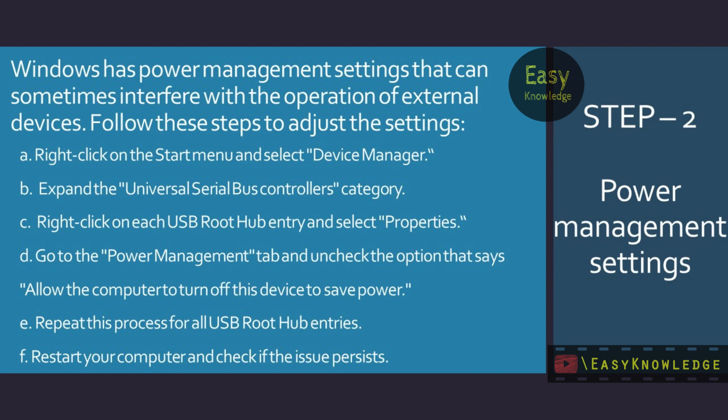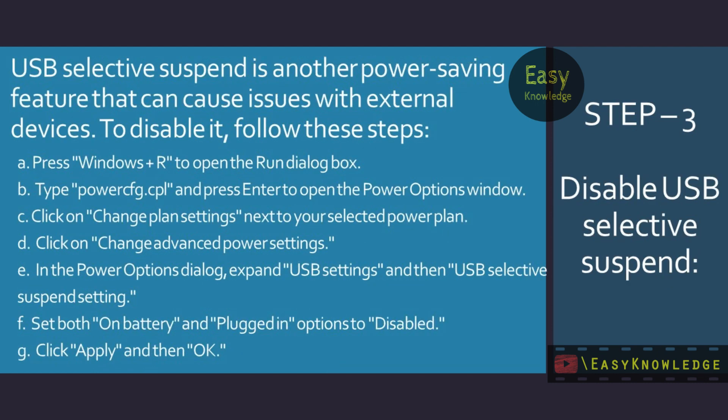Go to the Power Management tab and uncheck the option that says 'Allow the computer to turn off this device to save power.' Repeat this process for all USB root hub entries. Restart your computer and check if the issue persists.